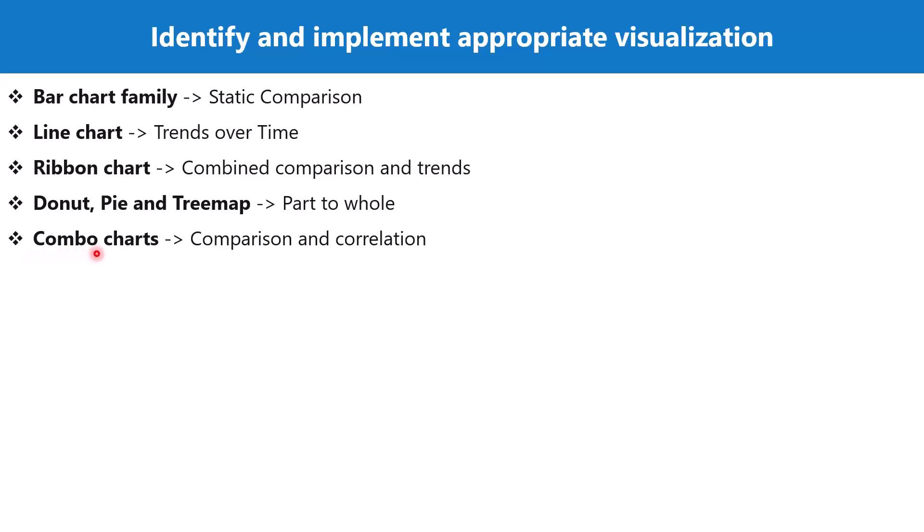There is another visual called the combo chart, which is used to show comparison as well as correlation. Correlation is a measure of similarity, so if you have a scenario where you want to show the similarity between values, a combo chart can be used. However, if you want to show correlation alone without comparison, there is another visual we will talk about shortly.